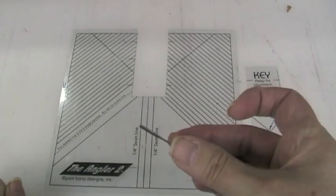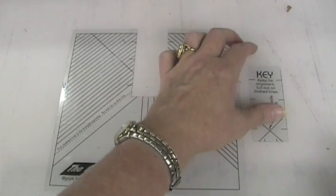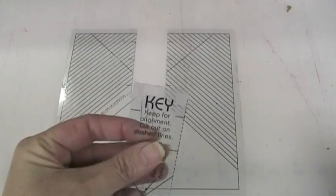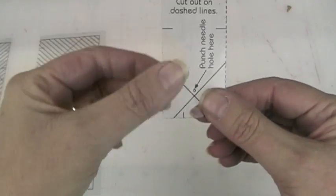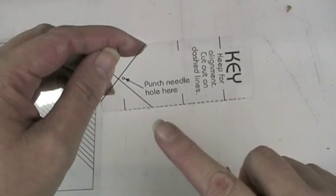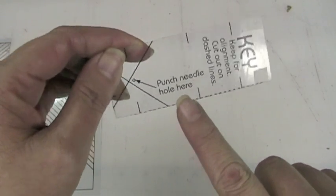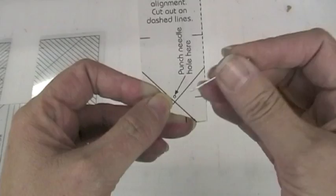Now you can take the old sewing machine needle. You can actually put it in your machine and help you punch the hole if you'd like. Or you can just push it through by hand. I actually did it by hand. But you can put the old needle in the machine and have the machine help you as well.